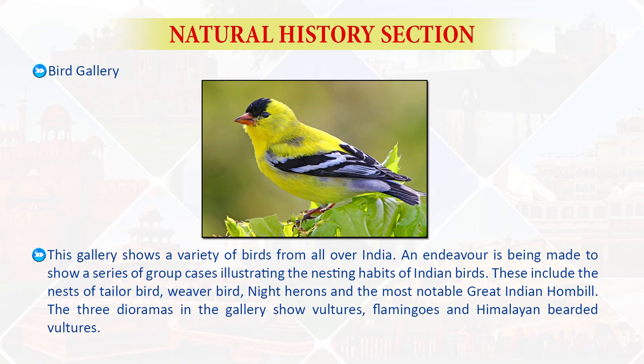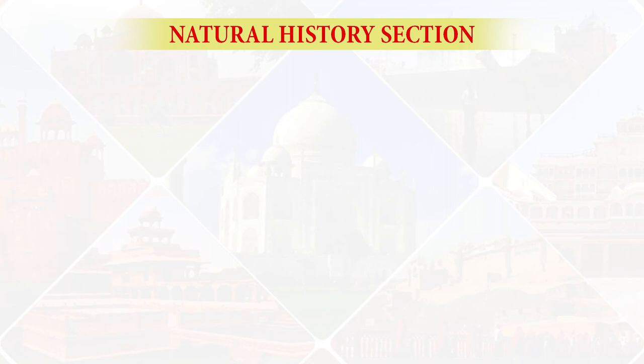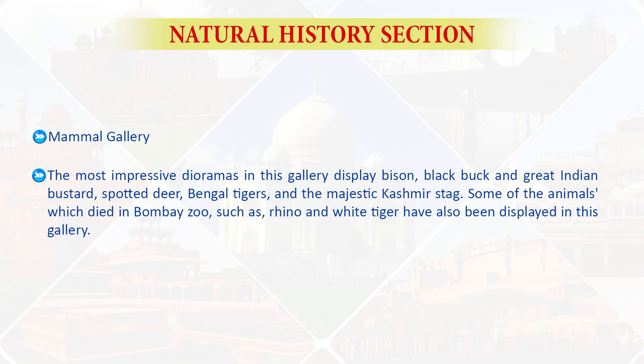The bird gallery shows a variety of birds from all over India and endeavors to illustrate the nesting habits of Indian birds, including the nests of the tailor bird, weaver bird, night herons, and the most notable — the great Indian hornbill. Three dioramas show vultures, flamingos, and Himalayan bearded vultures. The mammal gallery has impressive dioramas displaying bison, blackbuck, great Indian bustards, spotted deer, Bengal tigers, and the majestic Kashmir stag. Some animals which died in Bombay Zoo, such as the rhino and white tiger, have also been displayed in this gallery.